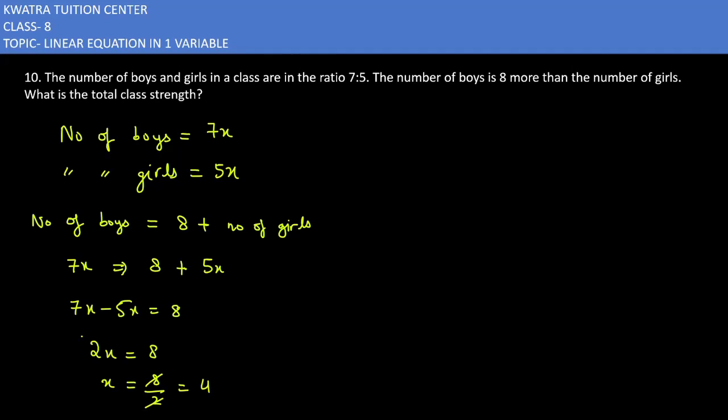Now for our total class strength. What is the number of boys and the number of girls? Number of boys: 7 into 4, which is 28. 5 into 4, the number of girls is 20.